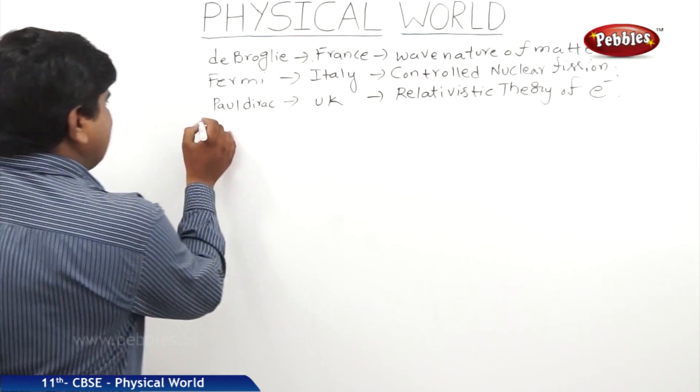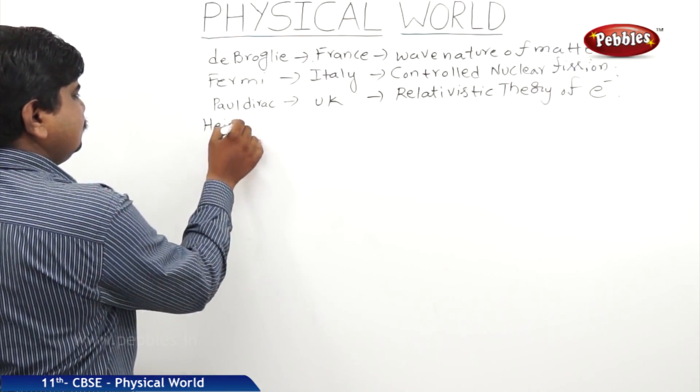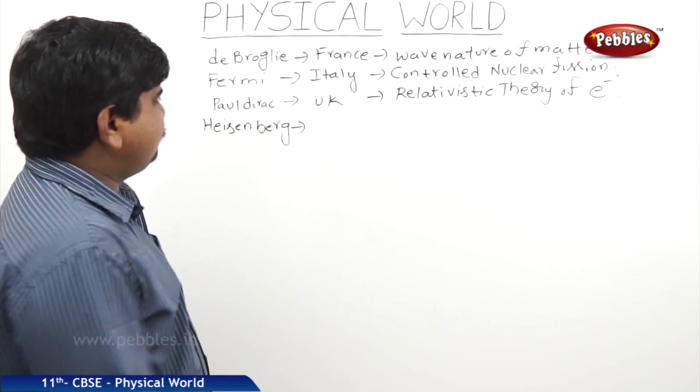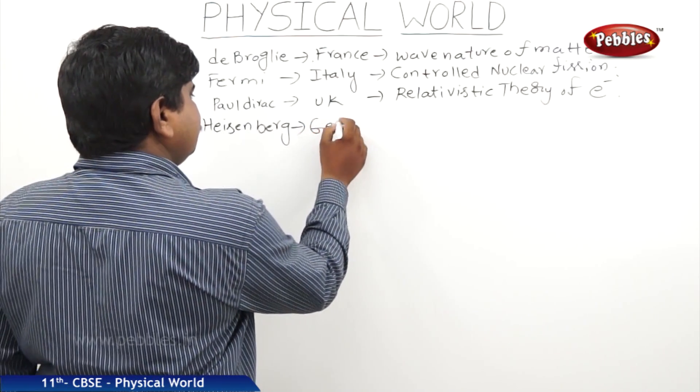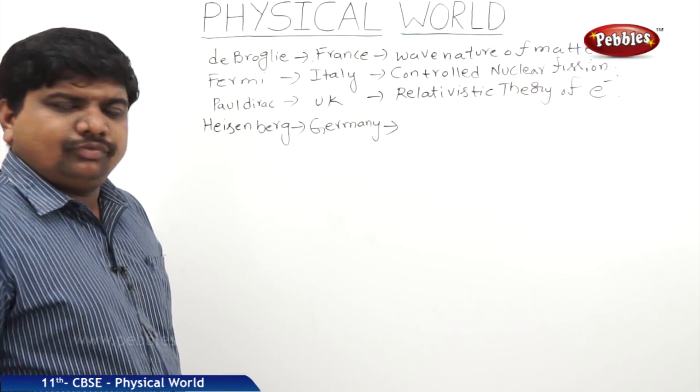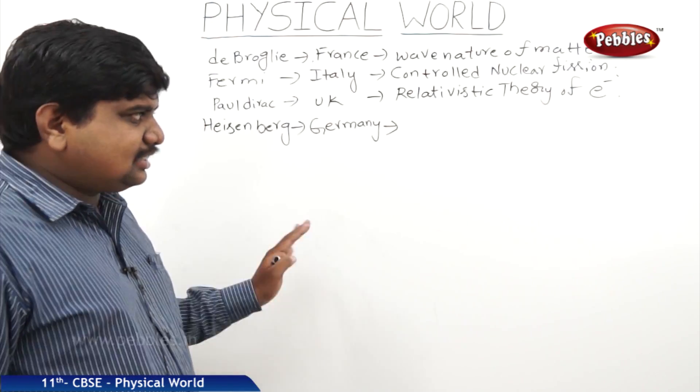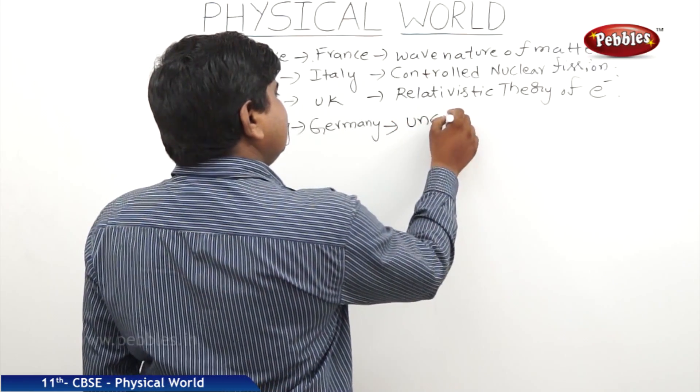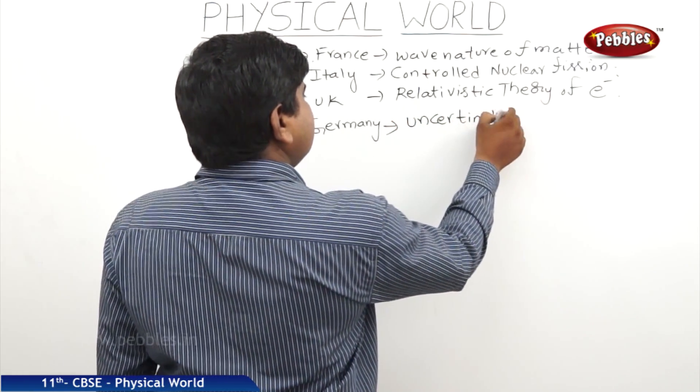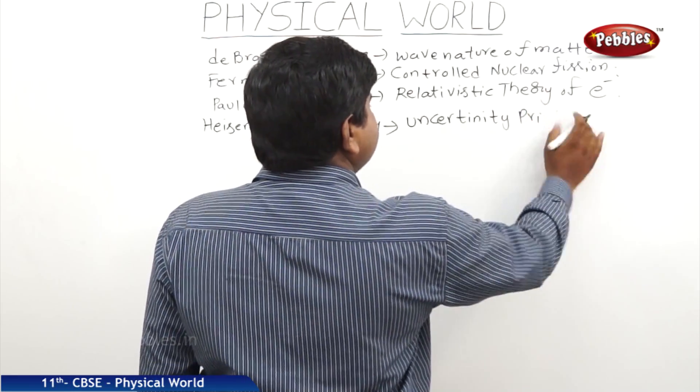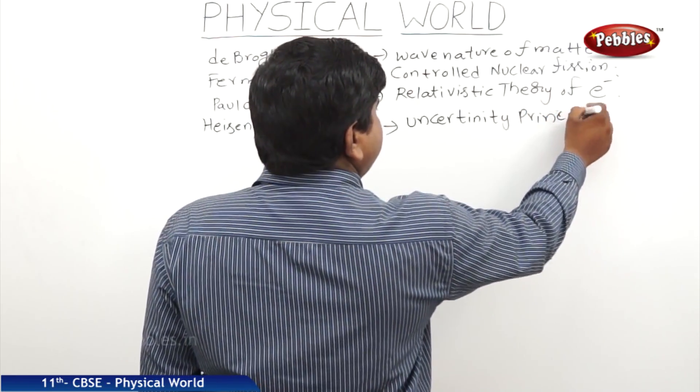The next one is Heisenberg from Germany. He has discovered the uncertainty principle as well as quantum mechanics.